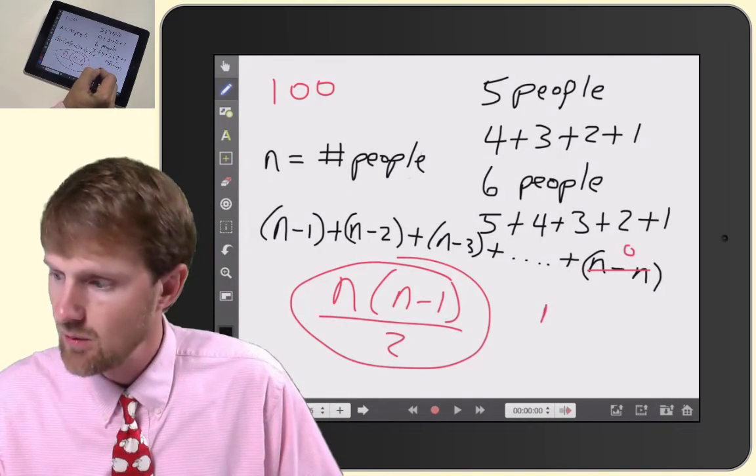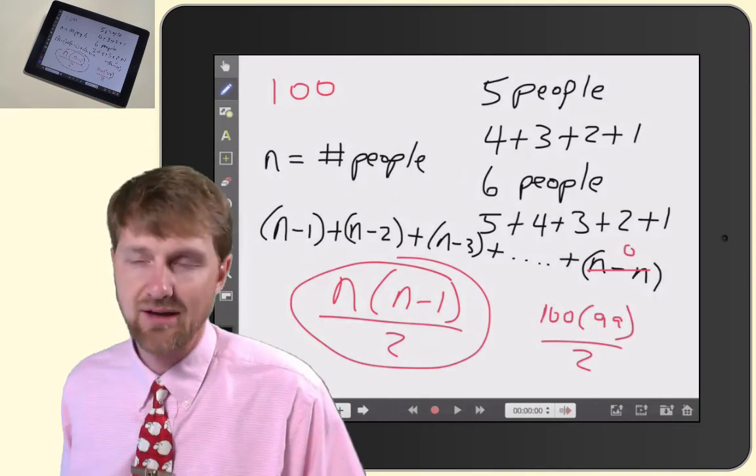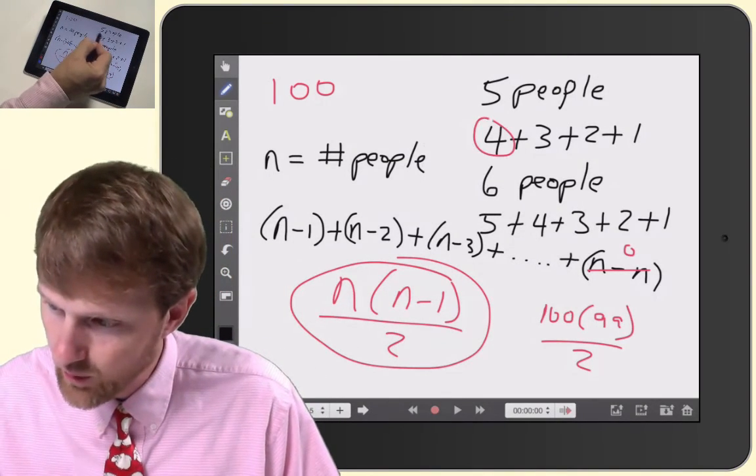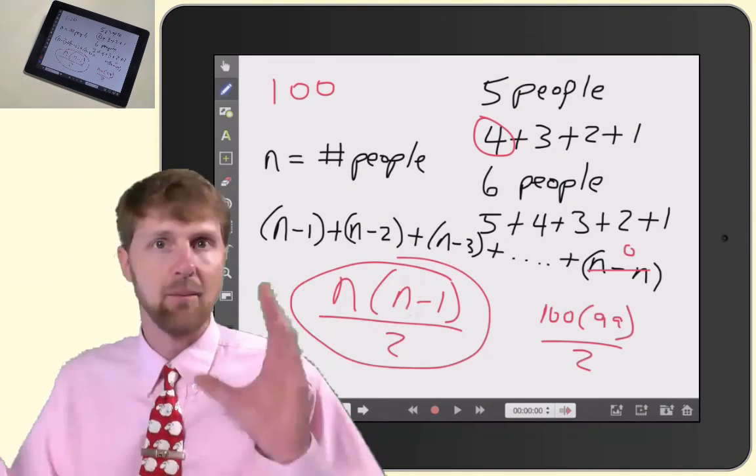You have your n times n minus one divided by two. So I got 100, 100 times 99 divided by two. And really, since we're starting with one less there, that's the n times n plus one over two, a bunch of wonderful stuff.